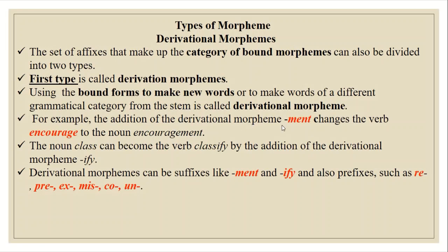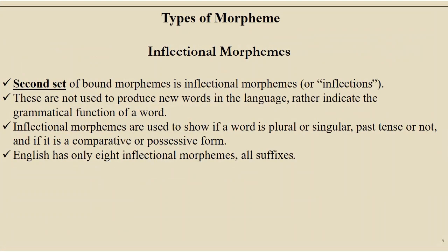For example, the addition of the derivational morpheme '-ment' changes the verb 'encourage' to the noun 'encouragement'. The noun 'class' can become the verb 'classify' by the addition of the derivational morpheme '-ify'. Derivational morphemes can be suffixes like '-ment' and '-ify', and also prefixes such as 're-', 'pre-', 'ex-', 'mis-', 'co-', and 'un-'.